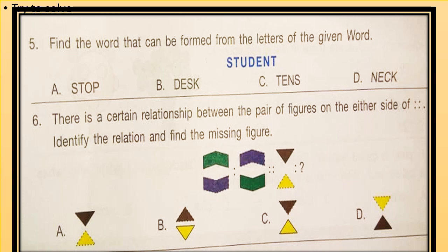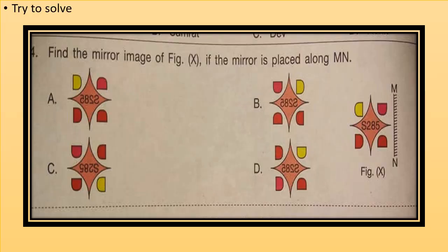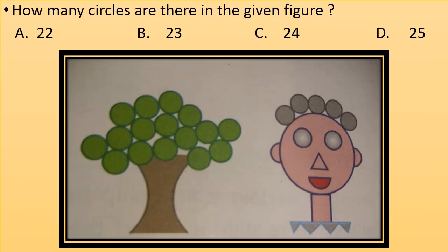These are two questions. Read them carefully and try to solve. Find the mirror image of figure X if the mirror is placed along MN. See the picture and try to solve the question. How many circles are there in the given figure? See the figure, count the circles and choose the correct option.